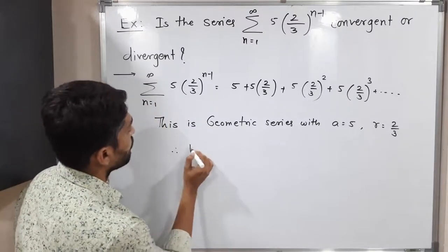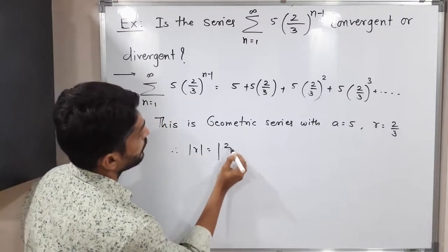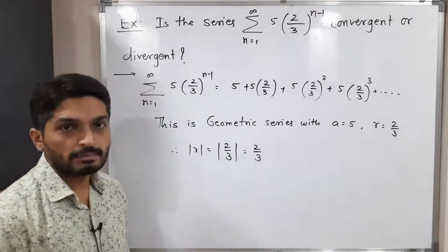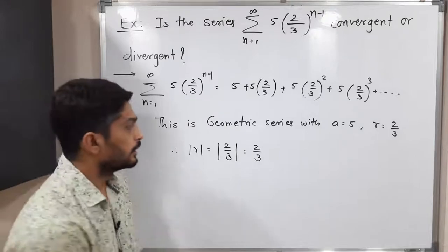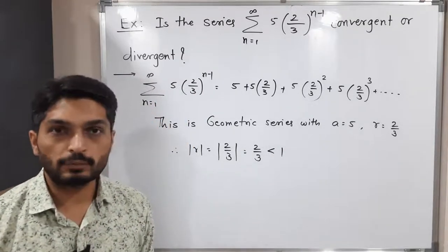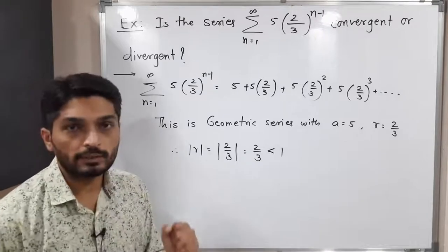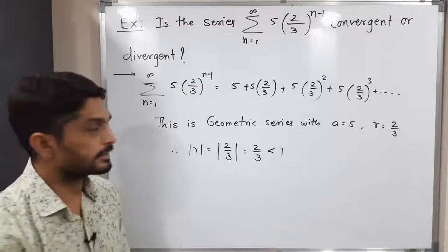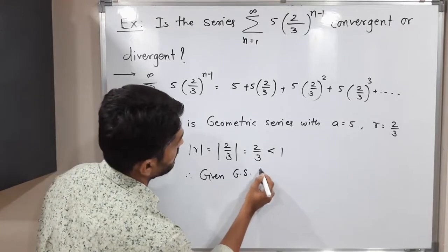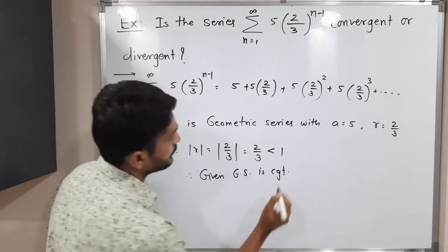So therefore, mod r is equal to mod 2 by 3, which is equal to 2 by 3. Its value will be same since it's a positive real number. So obviously it is less than 1. So 2 by 3 is less than 1. That means mod r is less than 1. That's why the given geometric series is convergent. So therefore, given geometric series is convergent.